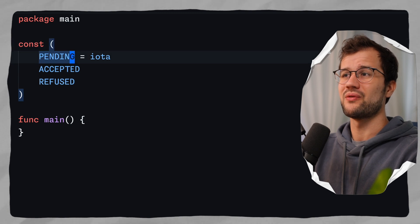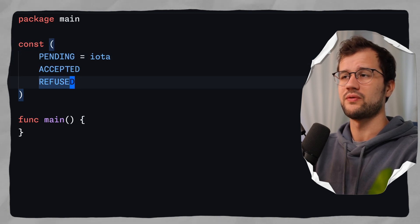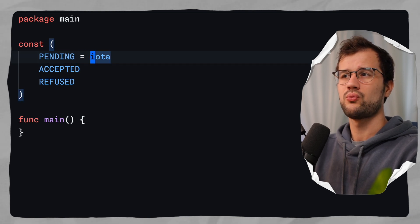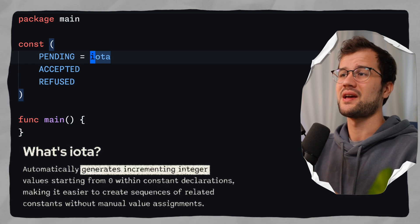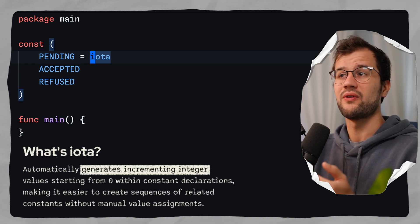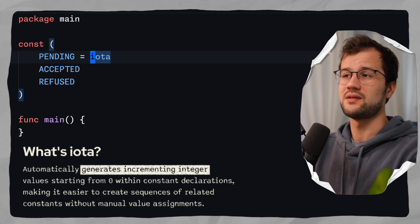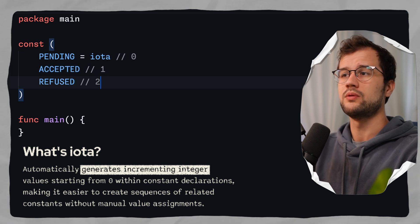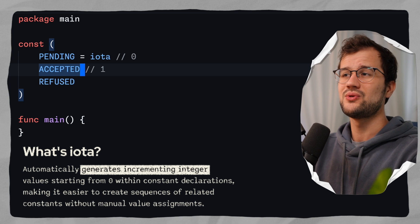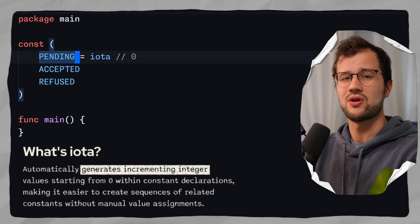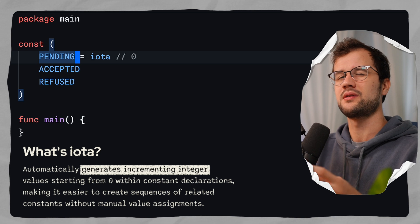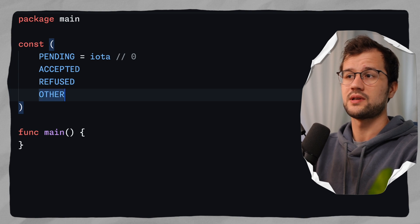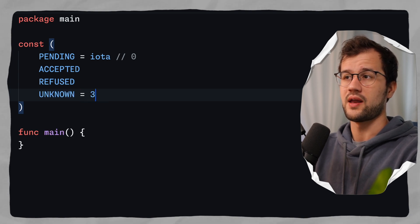We've only assigned the first one with iota. So what does iota mean? This keyword is typically used in constants, and you can use it to generate a sequence of numbers. Iota typically starts with 0, so pending will be 0, accepted will be 1, and refused will be automatically 2. We can make use of iota to say: start at 0, and then whenever we add a new constant, just add 1. So accepted is 1, refused is 2, and another keyword like 'other' or 'unknown' would be 3.